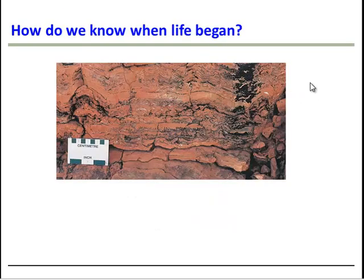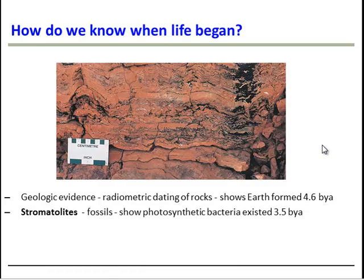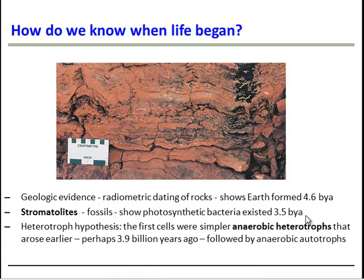So how do we know that life began when we say it began? One major piece of evidence is geologic evidence. By radiometrically dating rocks, we've been able to determine that Earth formed 4.6 billion years ago — that's what BYA means. There's also a unique type of fossil known as a stromatolite, formed by photosynthetic bacteria. We found these stromatolites as far back as 3.5 billion years ago, telling us when photosynthetic bacteria evolved. And since photosynthesis is complex, heterotrophs were probably around even earlier, maybe 3.9 billion years ago.